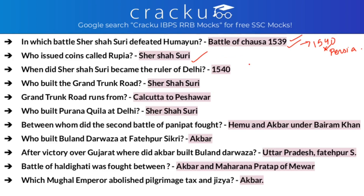Who issued the coin Rupiah? It was Sher Shah Suri. Sher Shah Suri became the ruler of Delhi in 1540. He also built the Grand Trunk Road, which runs from Kolkata to Peshawar, and built Purana Qila in Delhi. The Second Battle of Panipat was fought between Hemu and Akbar — at that time Akbar was under Bairam Khan, so the option 'Hemu and Bairam Khan' is also correct.